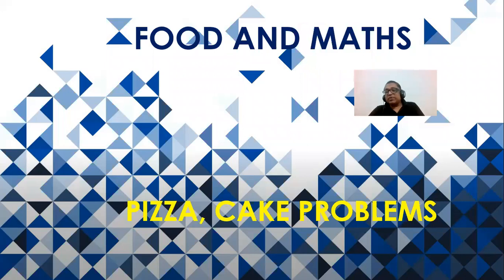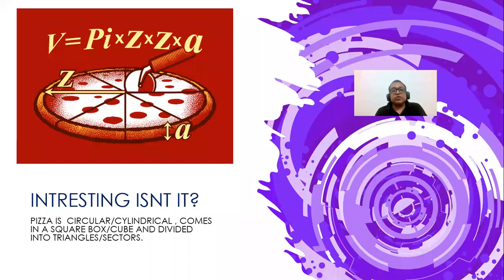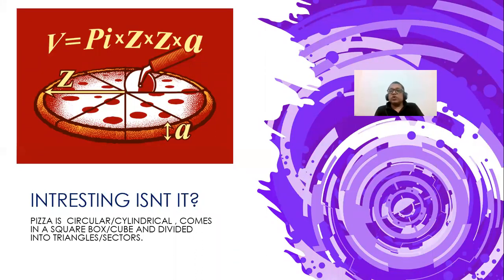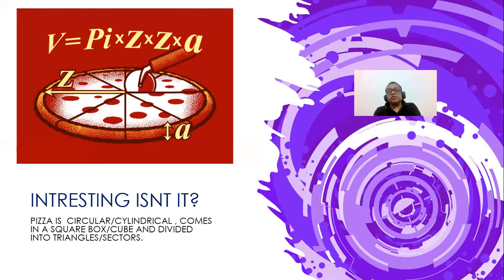Food is something children love, so a lot of questions can be developed on food — on pizza and cakes. A pizza is a circle in 2D, it comes in a square box, and is divided into triangles. In 3D, it's actually a cylinder because it has height. It comes in a cubical box and you divide it into sectors. The mathematical shapes involved are the circle, square/cube, and triangle/sector.